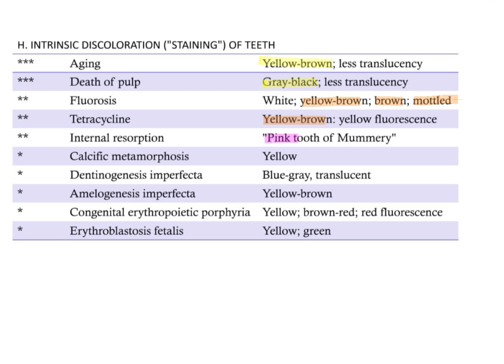Internal resorption is the pink tooth of Mummery. Calcific metamorphosis is yellowish discoloration. Dentinogenesis imperfecta is bluish-grey discoloration. Amelogenesis imperfecta is yellowish-brown discoloration. Congenital erythropoietic porphyria is brown-red or yellow discoloration with red fluorescence. Erythroblastosis fetalis is yellow or green discoloration.